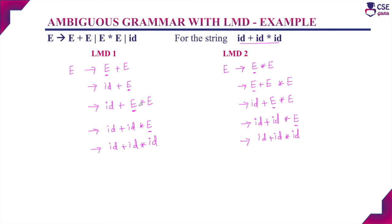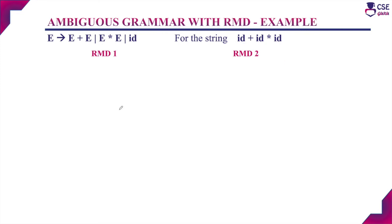If you check here, there are two different leftmost derivations. If the grammar derives more than one leftmost derivation, then that grammar is also an ambiguous grammar.